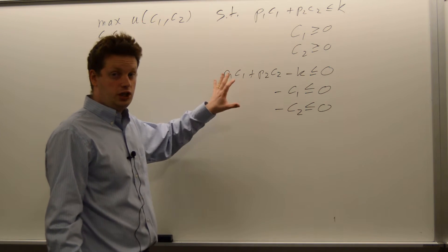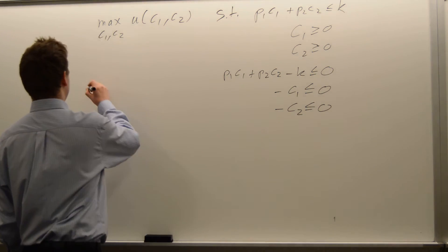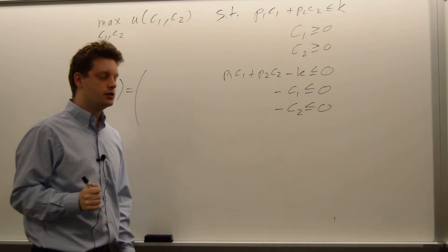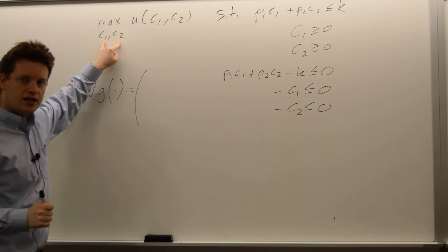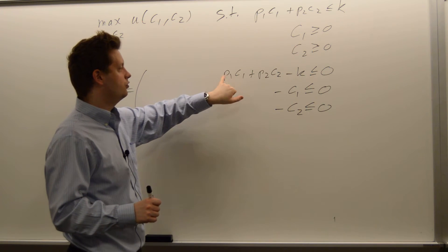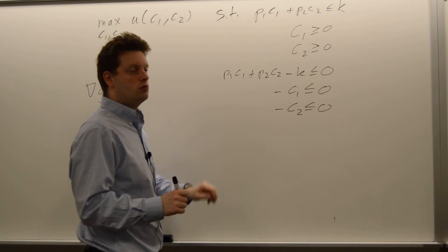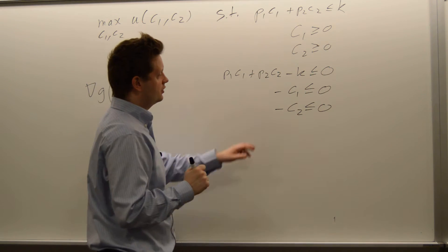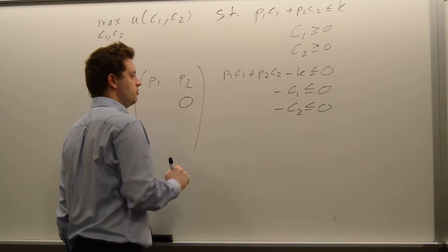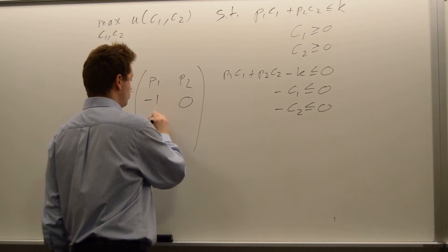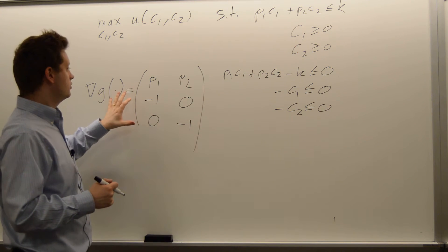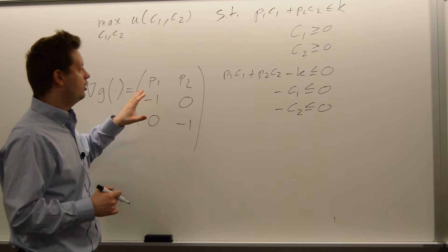Let's call these constraints together g, and write down the gradient of g. The gradient of g will be a matrix where we take derivatives with respect to c1 and c2. The first constraint gives p1 and p2. The second gives −1 with respect to c1 and 0 for c2. The third gives the reverse. We now have our gradient, which needs to have the required rank when we look at the binding constraints.